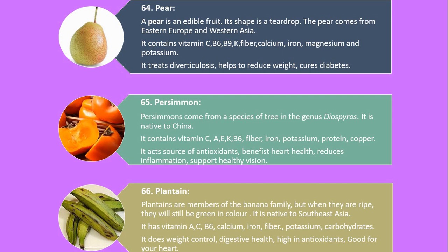Number 65. Persimmon. Persimmons come from a species of tree in the genus Diospyros. It is native to China. It contains vitamin C, A, E, K, B6, fiber, iron, potassium, protein and copper. It acts as a source of antioxidants, benefits heart health, reduces inflammation, and supports healthy vision.